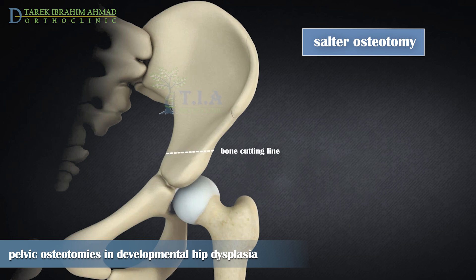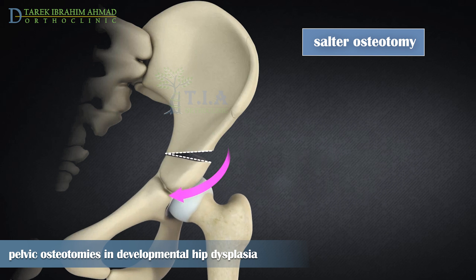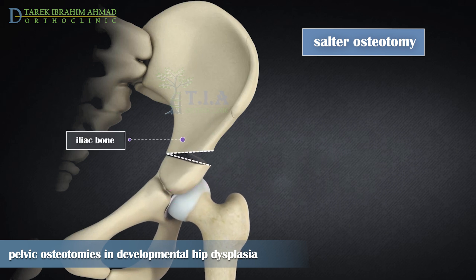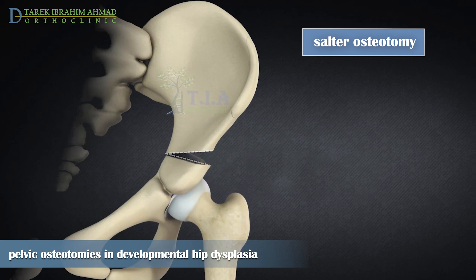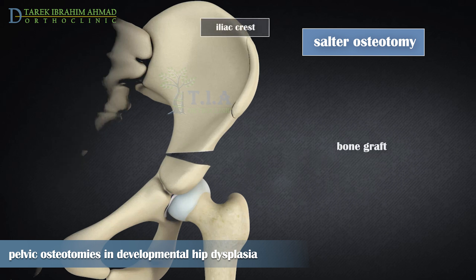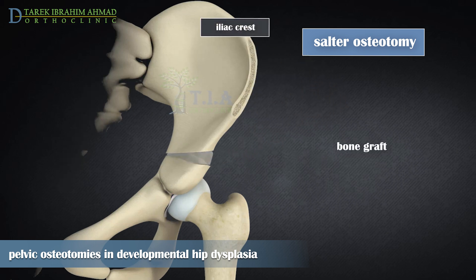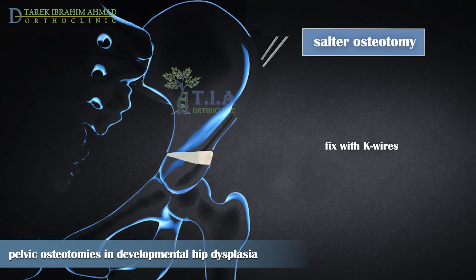The Salter osteotomy is a transverse iliac cut from just above the acetabulum extending to the sciatic notch. The distal acetabular fragment is rotated laterally to provide anterior and/or lateral coverage of the femoral head. A triangular wedge of bone is cut from the iliac crest and placed into the osteotomy site, fixed with two or three threaded K-wires.